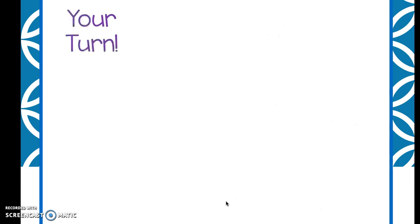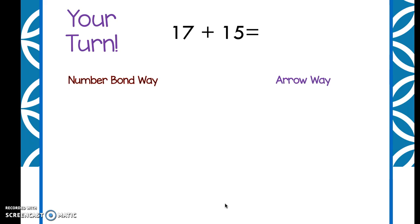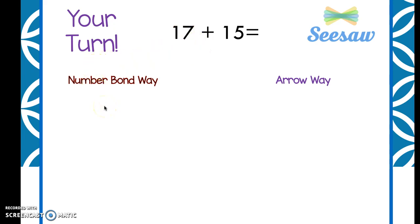Now it's your turn. One last problem: you're going to do 17 plus 15, and I want you to show me the number bond way and the arrow way on your board. Then you're going to Seesaw your answer to your teacher so you can show them all the great thinking you're doing. I am so impressed with how you can add two two-digit numbers when the ones digit has a sum greater than 10. You did amazing work! Make sure you're showing your work so your teacher can see your thinking, and make sure you don't make silly mistakes like writing down the wrong numbers. Good luck!